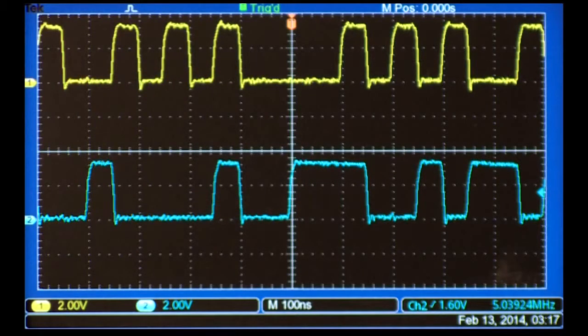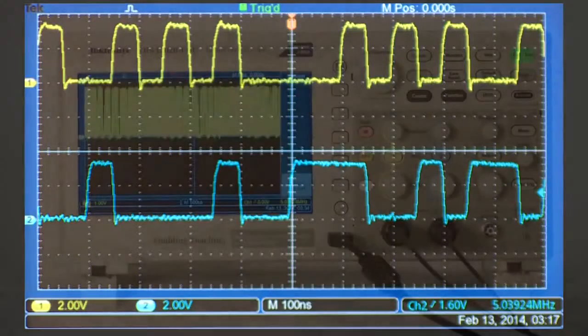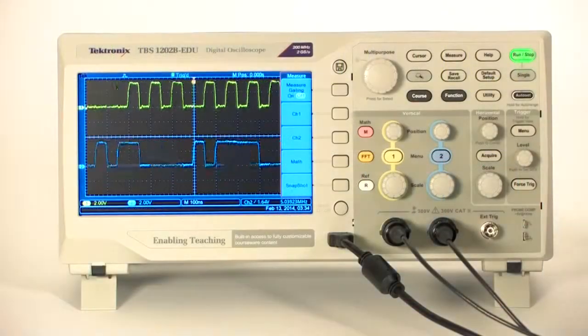Digital signals are seldom simple periodic pulses. Pulse trains and bursts make up the data, address, and control signals. Let's take a look at some more typical digital signals.